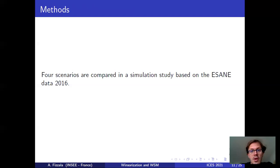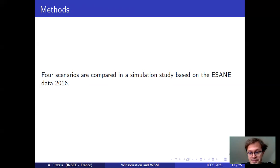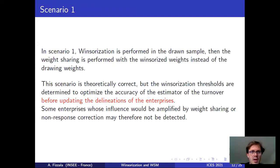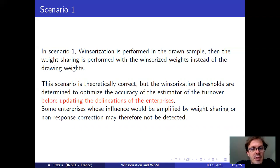There are four methods to combine the weight share method and Winsorization that we have tried on the first data corresponding to the change I mentioned at the beginning. The first method — scenario one — Winsorization is performed first with the drawn sample, and then we do the weight sharing. It seems correct in theory, but a problem could happen if some influential enterprises are amplified by weight sharing and then not detected for Winsorization correction.